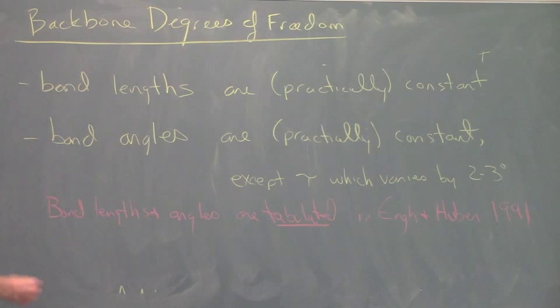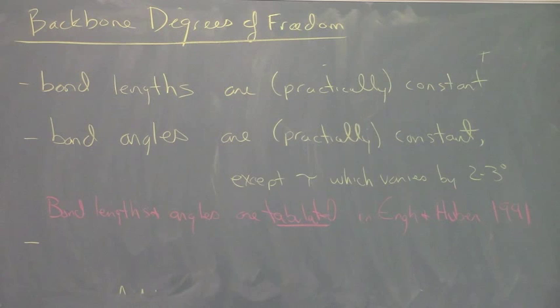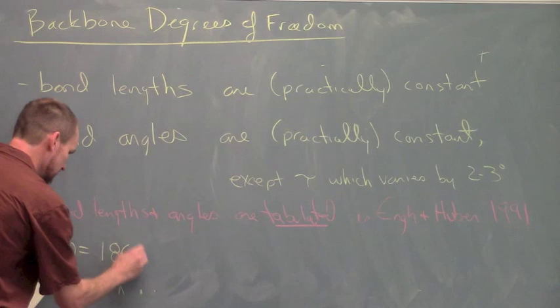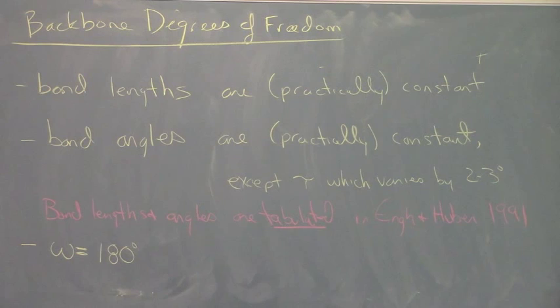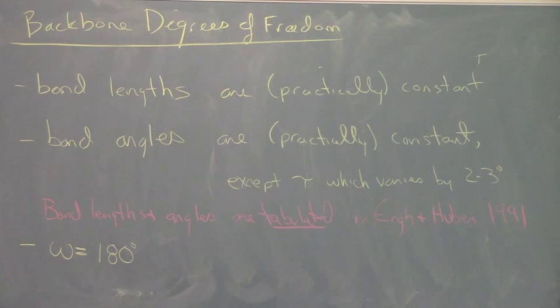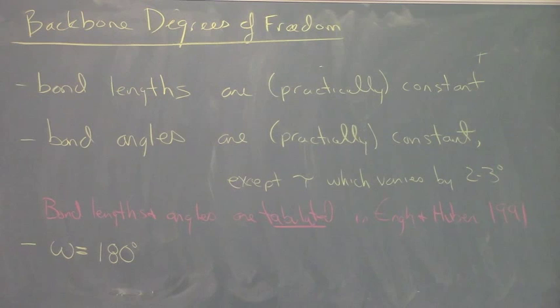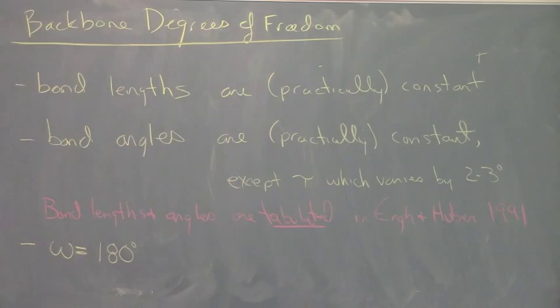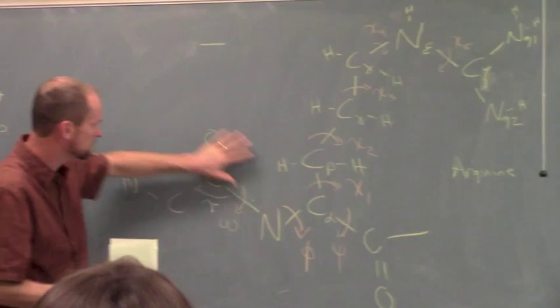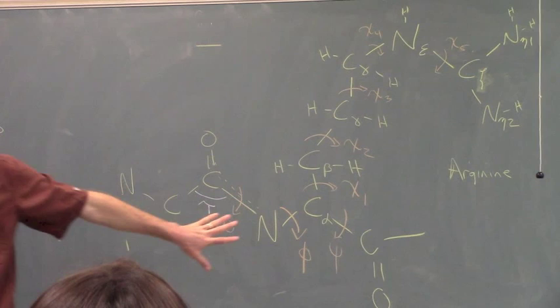This is one of the articles I've posted on the website for reference. You don't need to read the whole article, but the tables will be useful. If everything's constant, what's the tough part? The tough part are these torsion angles. Omega is about 180 degrees. Omega is this bond between the carbonyl group and the nitrogen across this peptide bond.